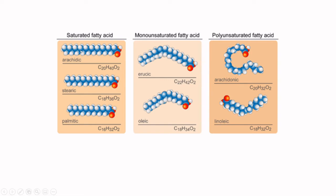In quick summary: saturated fatty acids are extremely linear and therefore thermodynamically able to pack into organized forms much more readily than mono or polyunsaturated fatty acids, and as such their melting points are going to be higher — more likely to be solid at room temperature. Monounsaturated fats are more likely to be liquid, and polyunsaturated fats are extremely likely to be liquid at room temperature.